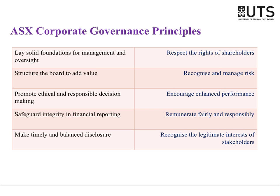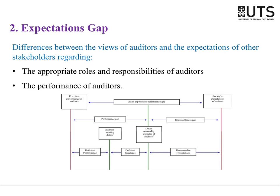These are the corporate governance principles under the ASX — companies listed on the ASX must comply with these. Now, the audit expectations gap: I mentioned this briefly last week. The audit expectations gap is the difference between what society thinks auditors do and what auditors actually do. Some of that gap comes from deficient performance or deficient standards, but a lot of it comes down to misconceptions and unrealistic expectations that society has of auditors.